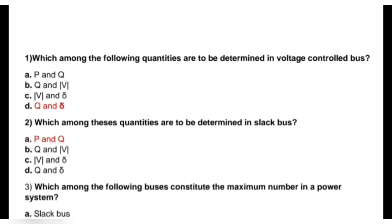First question is: which among the following quantities are to be determined in a voltage controlled bus? Options are P&Q, Q&V, V&D, or Q&D. The correct answer is Q&D. There are three types of buses: load bus or PQ bus, generator bus or PV bus, and slack bus or reference or swing bus.